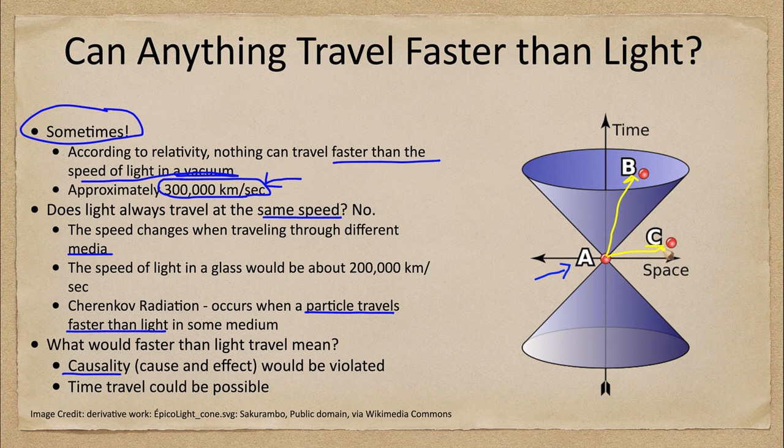However, in order to travel outside of the cone, you would have to reach point C, and that is not possible because it would require traveling faster than light. What happens at point A could cause point B, but could not possibly cause point C. Things like time travel and all of the paradoxes that come with it would also be possible if you could travel faster than light. Under relativity, it is simply not possible to exceed the speed of light in a vacuum.